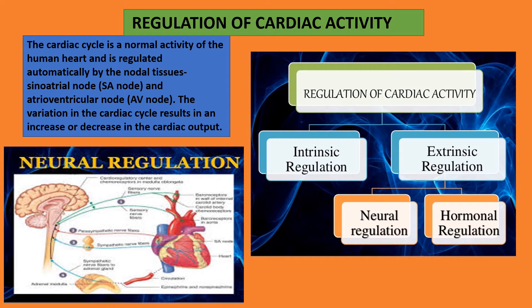See the first diagram where regulation of cardiac activity has been shown in a tabular form. Regulation of cardiac activity has been divided into two parts: intrinsic regulation and extrinsic regulation. Extrinsic regulation is again divided into two parts: neural regulation and hormonal regulation. Neural regulation refers to when our brain regulates our heart activities, as shown in the second picture.